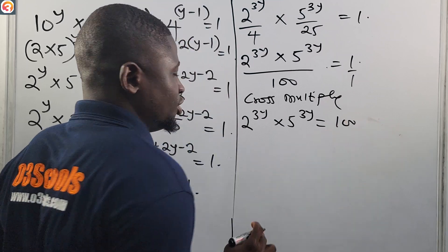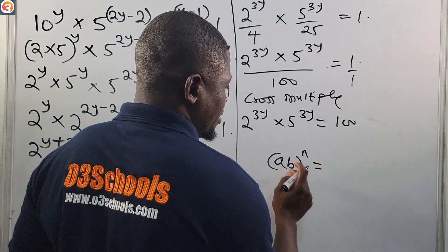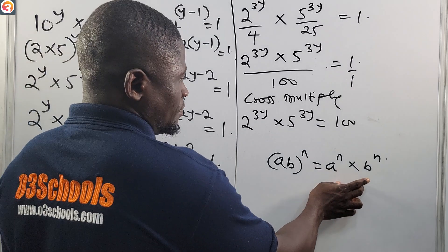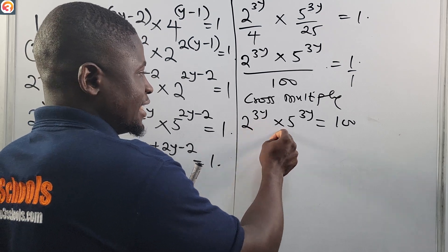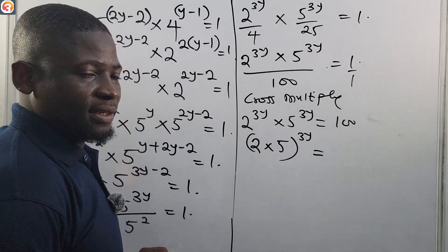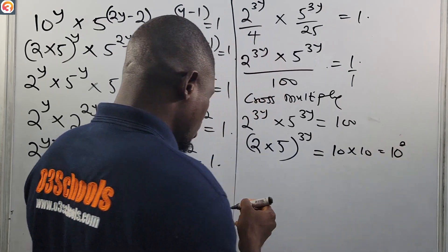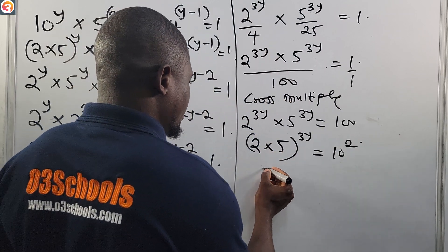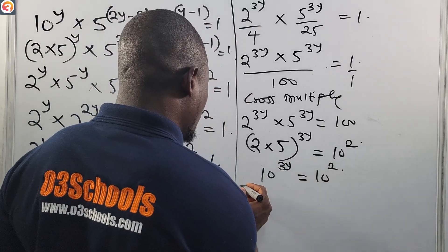Applying the rule (ab) raised to power n equals a raised to power n times b raised to power n in reverse: 2 raised to power 3y times 5 raised to power 3y is the same as (2 times 5) raised to power 3y, which is 10 raised to power 3y. And 100 in index form is 10 times 10, which is 10 raised to power 2. So 10 raised to power 3y equals 10 raised to power 2.